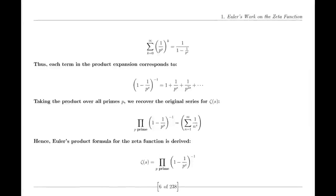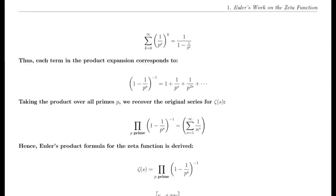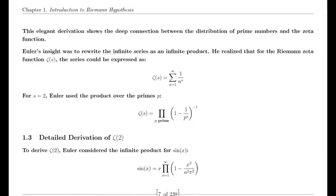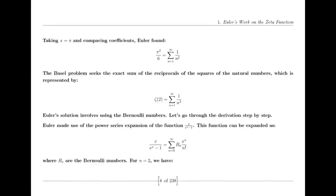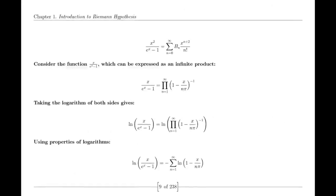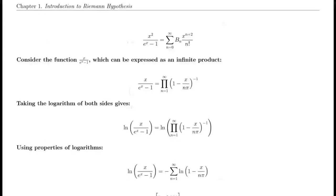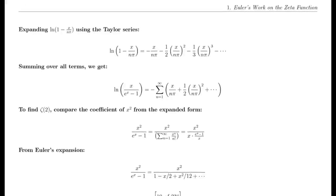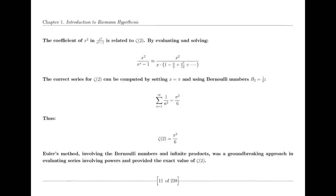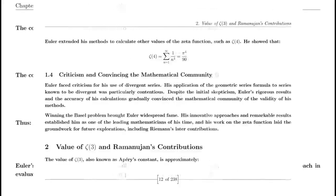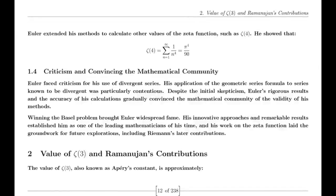Riemann also made use of the Jacobi Theta function, which has significant applications in various areas of mathematics. The Theta function's series representation and modular properties were instrumental in Riemann's derivation of the functional equation for the Zeta function. This equation is crucial for understanding the Zeta function's behavior across the complex plane and relates its values at S and 1−S through a complex expression involving π, the gamma function, and trigonometric functions.